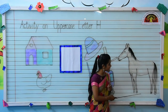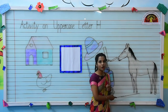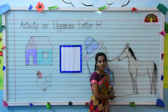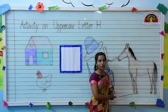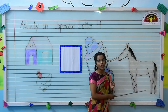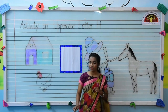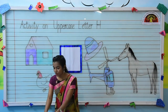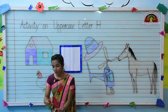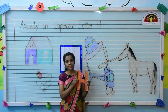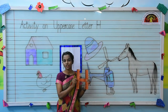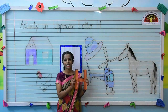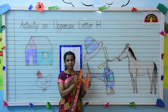What is this? This is a horse. H for horse. So let's start the activity. So kids, what is this? This is uppercase letter H.